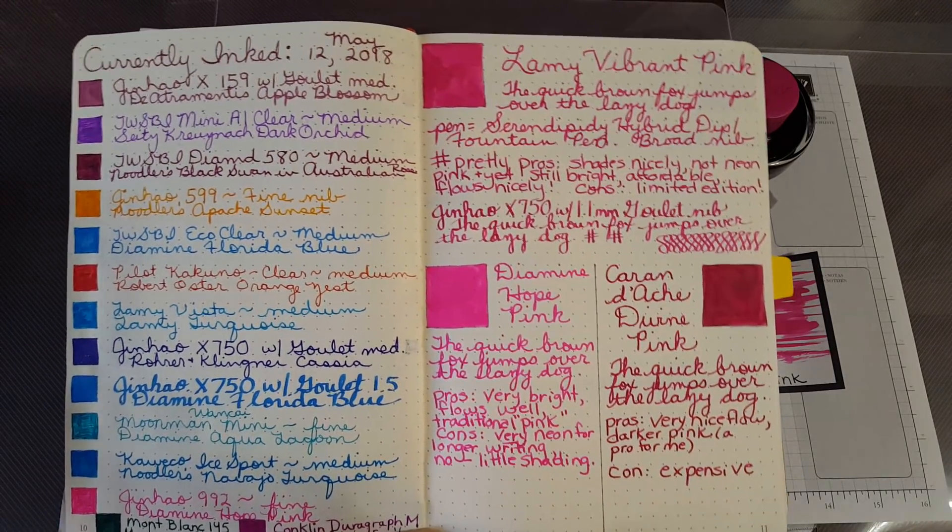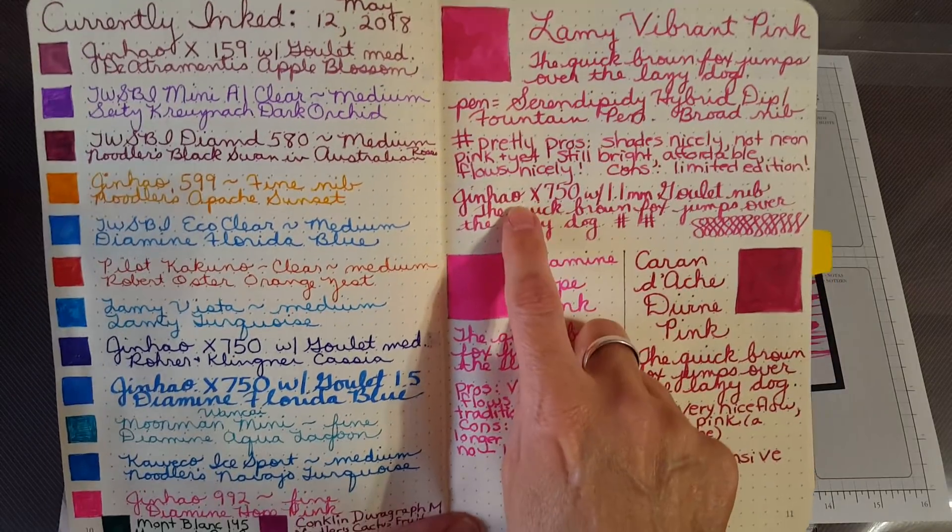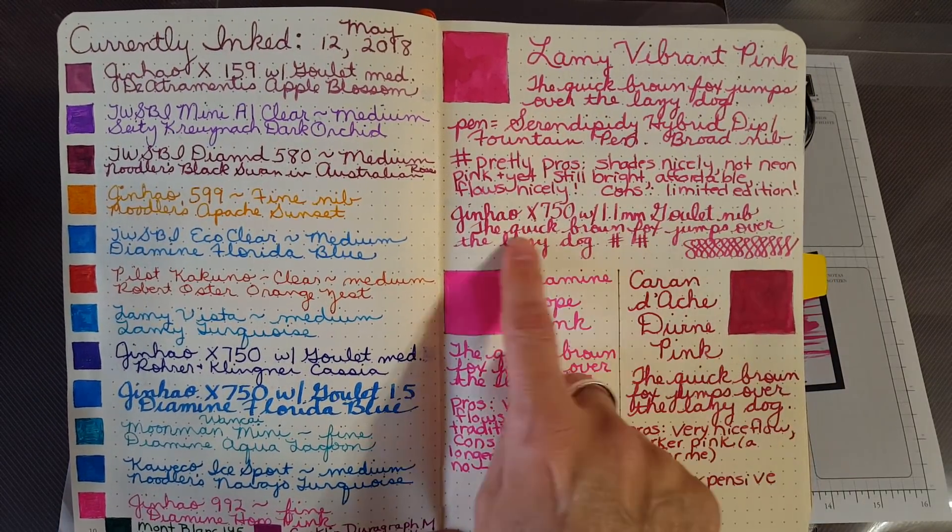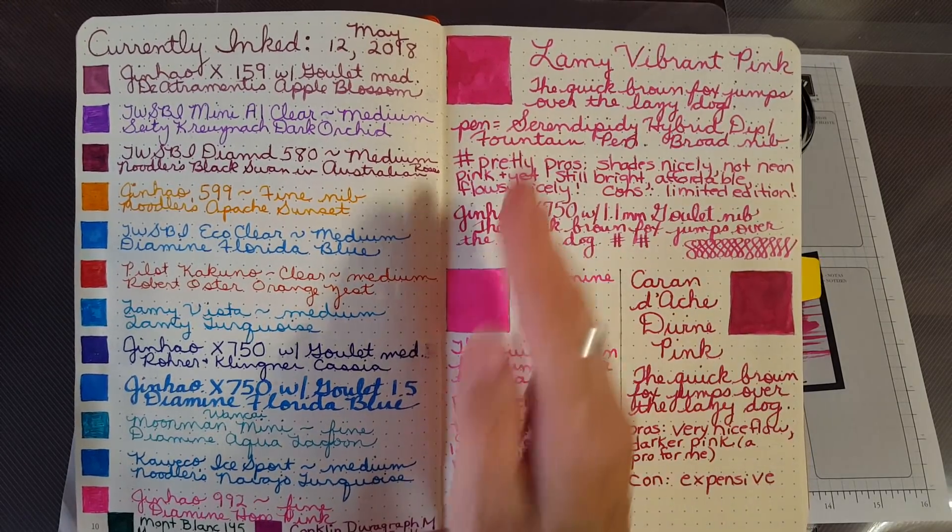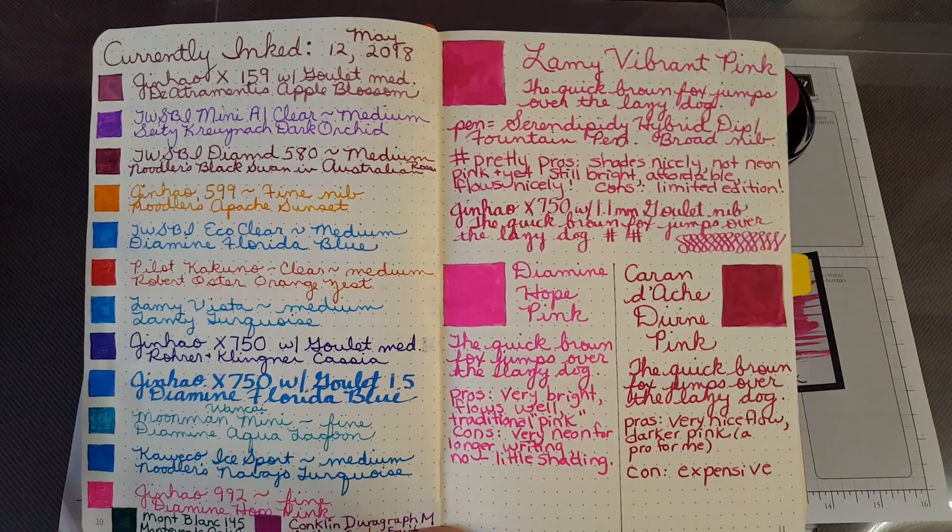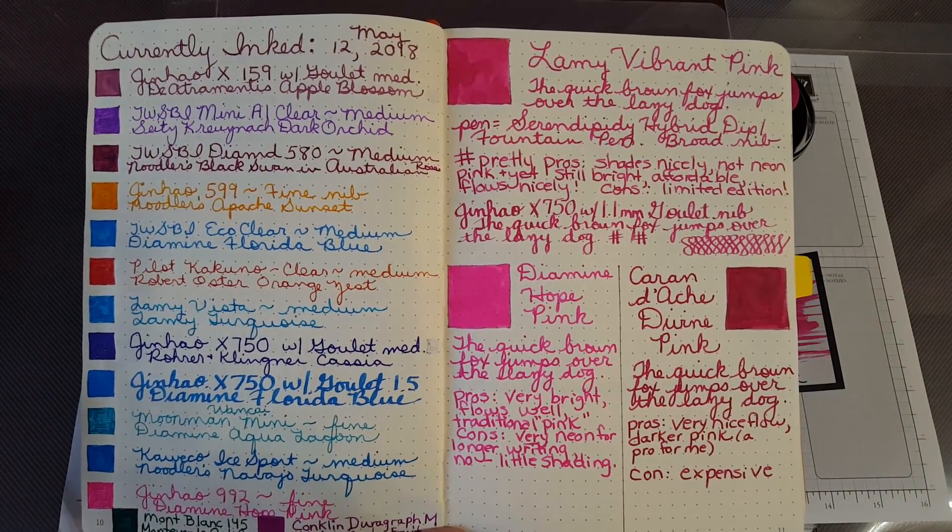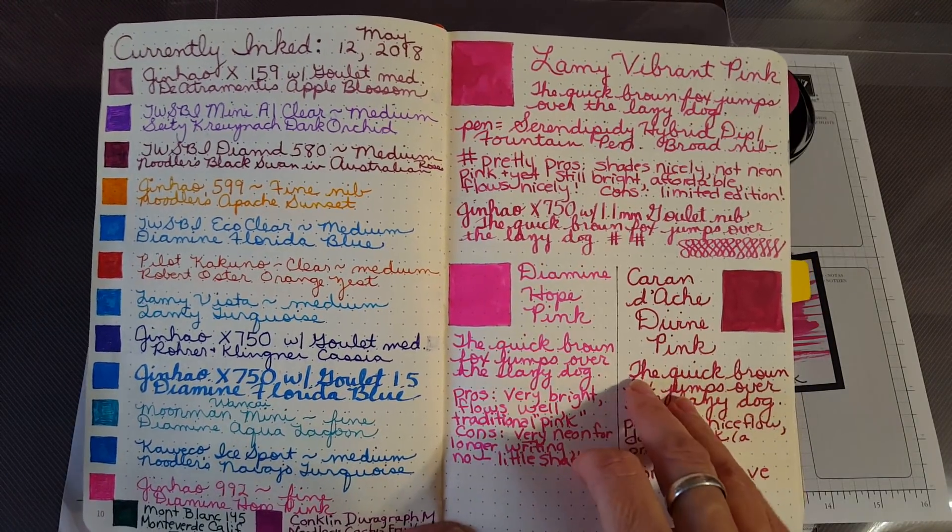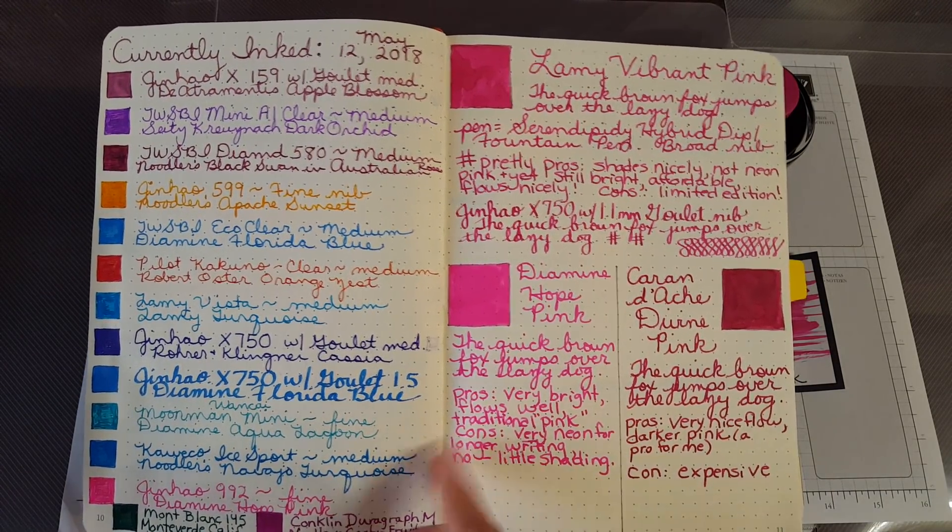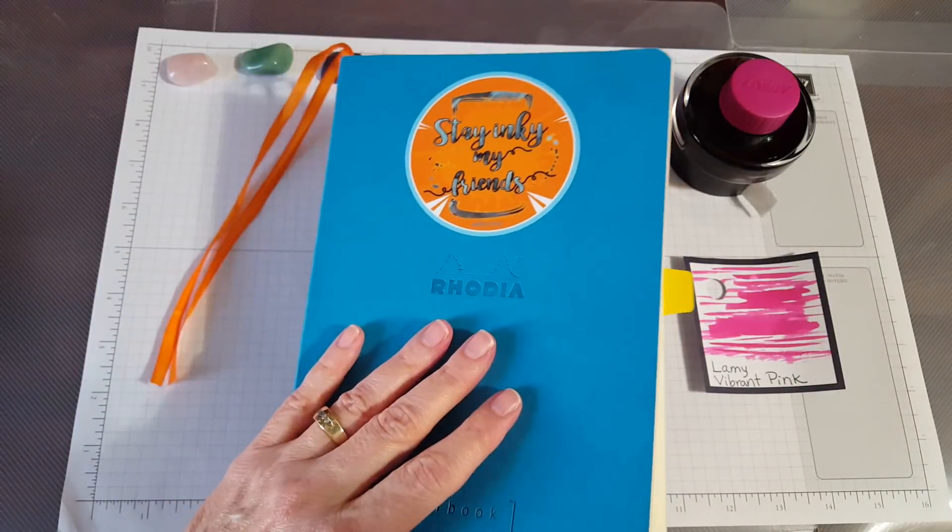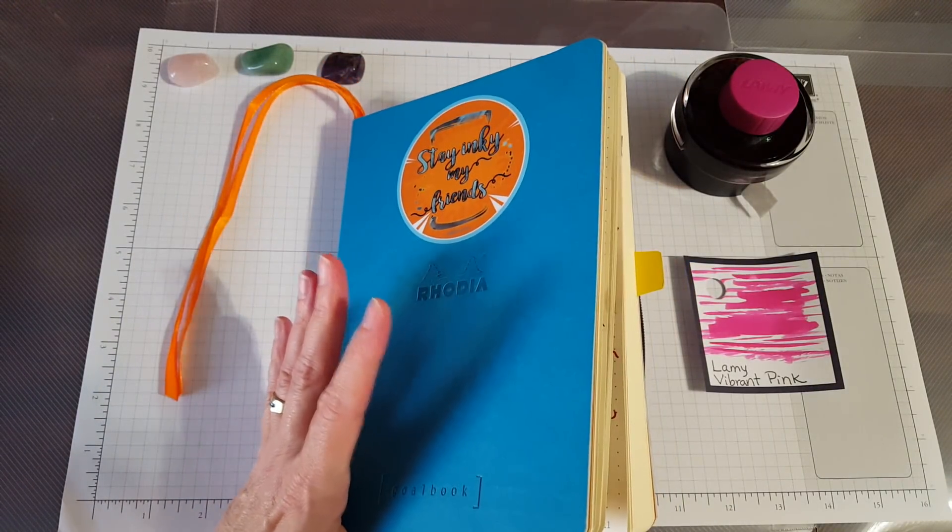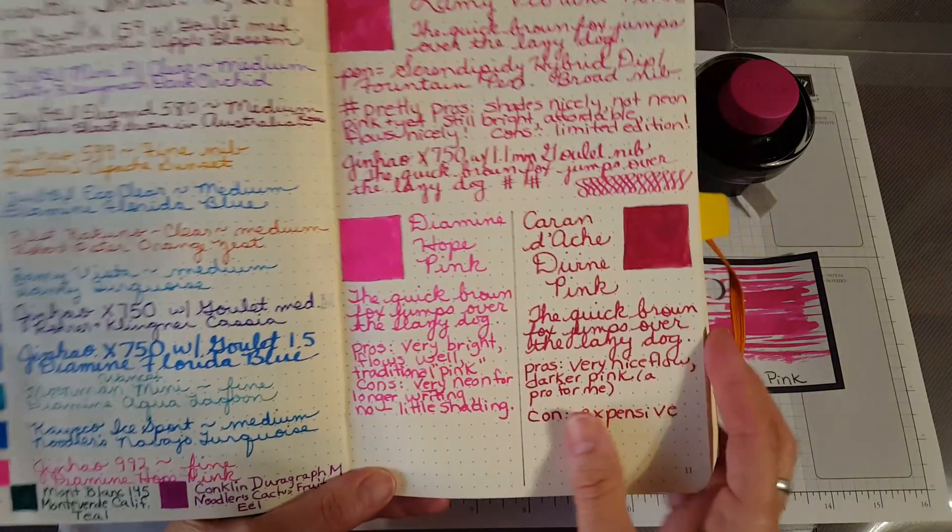I'm using that Serendipity pen, the one that's a hybrid dip pen, and then I came back in with the Goulet 1.1 millimeter stub to write with it just in here. That's when I realized I really probably should have used a whole spread, but that's okay, I can always do that again. This gave me a good chance to see how they compared and that's why I really love this notebook - to be able to go beyond what I can do in my currently inked journal.